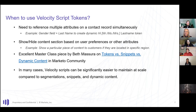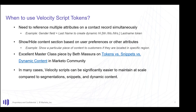Beth, who's on the call, has a good master class piece on the community that talks about tokens versus snippets versus dynamic content — a great resource for figuring out what you should be doing. But in many cases, Velocity scripts — while they are code — can be much easier to maintain at scale than segmentations or snippets. For example, I have a custom 'Hello First Name' token that scrubs for weird characters in the nickname field in Salesforce, because sales reps sometimes put notes or typos there.